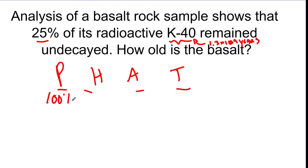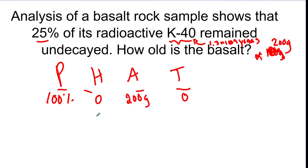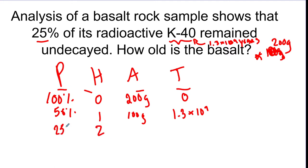Starting with 100% and zero half-lives, we'll use 200 grams as our amount and zero years for initial time. After one half-life, 50% of K-40 remains — that's 100 grams — and 1.3 × 10⁹ years have passed. After a second half-life, 25% remains, which is 50 grams, and the time is 2.6 × 10⁹ years. So at 25%, the basalt would be 2.6 × 10⁹ years old.